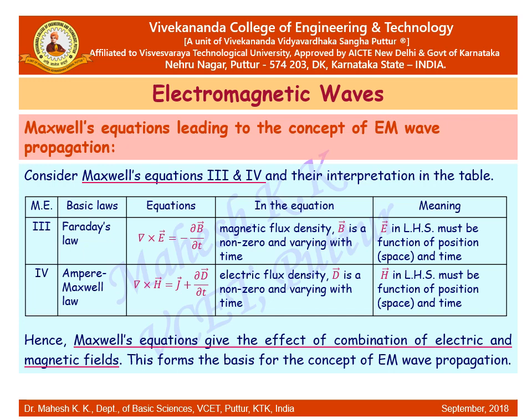Coming back to Maxwell's equations 3 and 4: in the third equation, E on the left-hand side must be a function of position and time. Similarly, in the fourth equation, H, the magnetic field on the left-hand side, must also be a function of position and time. This means Maxwell's equations give the effect of a combination of electric and magnetic fields, which forms the basis for the concept of electromagnetic waves.